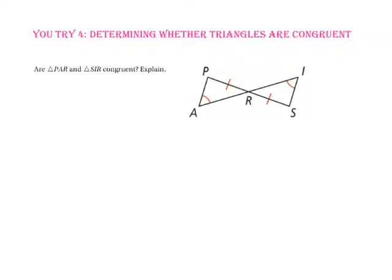Pause the video and do you-try number four. We have two corresponding sides and two corresponding angles of two triangles that are congruent. Angle-PRA is congruent to angle-SRI because they are vertical angles. Since we have an angle, another angle, and a non-included side congruent to an angle, another angle, and a non-included side, these two triangles are congruent by angle-angle-side.